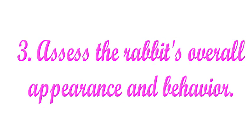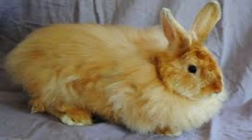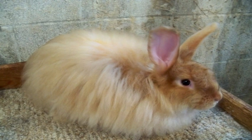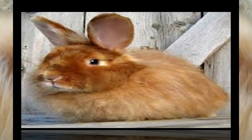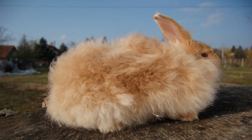Assess the rabbit's overall appearance and behavior. You want to make a list of your rabbit's attributes in order to gauge what age it might be. Things to look for include activity levels: does the rabbit regularly exhibit playful behavior, or does it mainly sleep and eat? Does the rabbit move in fluid, graceful movements, or does it seem stiff and sore? Also consider overall appearance: is the rabbit's coat soft and luxurious, or harsh and coarse?